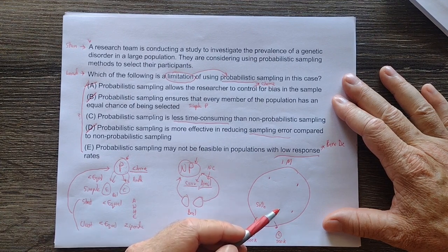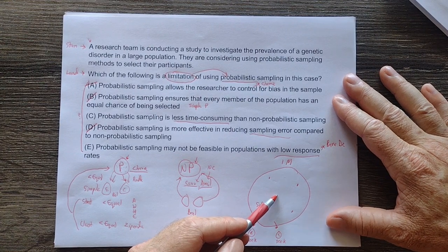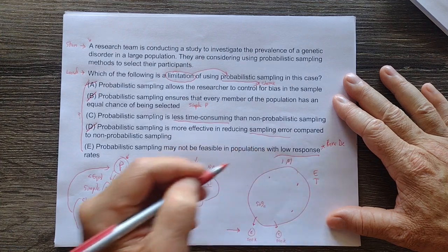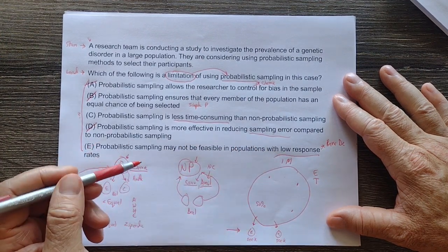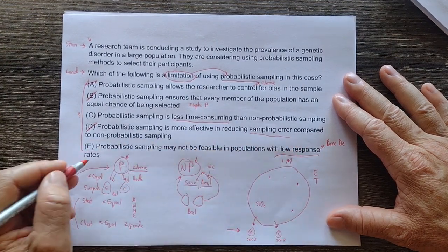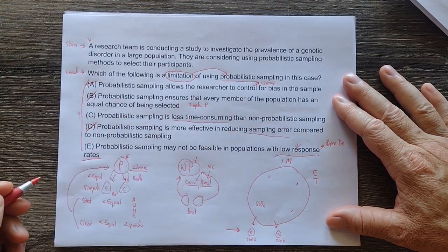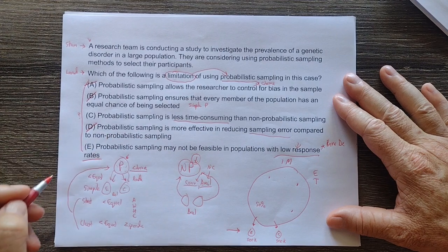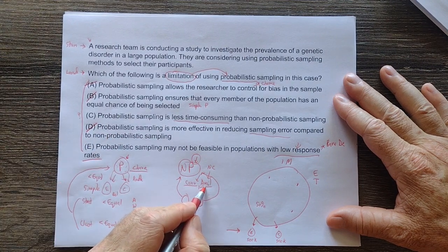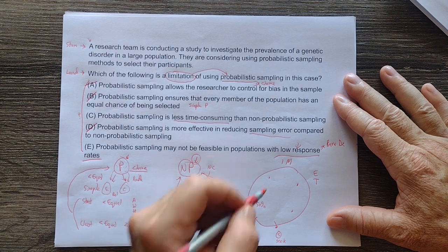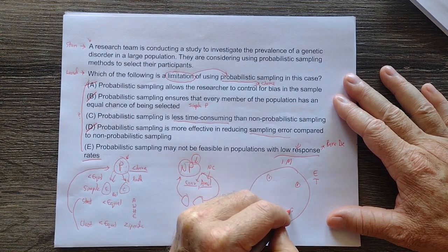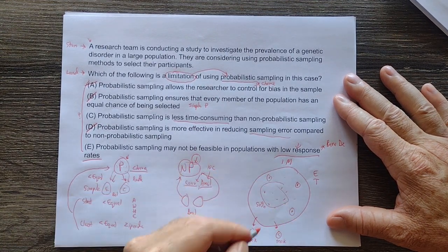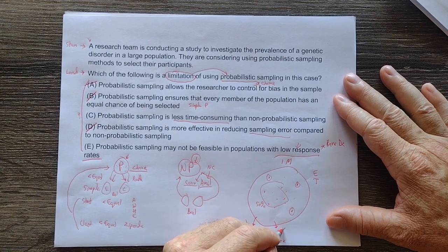That makes it so that probabilistic is not feasible. It becomes very expensive and it becomes very time-consuming. It's difficult to do. So oftentimes in rare diseases or when we have low response rates, probabilistic sampling is not going to be the best choice. Non-probabilistic, where we might have availability, convenience sampling, or we might choose people that have identified with the disease and then choose people who have not identified with the disease, and then we put them in the experimental and put them in the control.